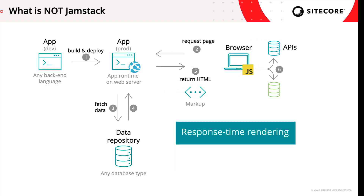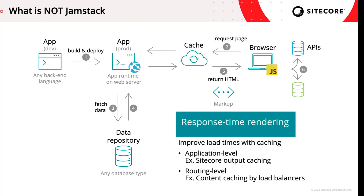The traditional approach to mitigating this has been to implement caching, which significantly improves load time for subsequent requests. And note that I'm not talking about browser caching, which only benefits users who've already visited the page, but application level or routing level caching, which benefits all users who will visit the page in the future. But let's look at an alternative approach to solving this — the JAMstack approach.